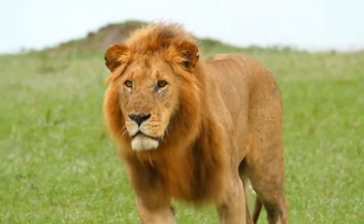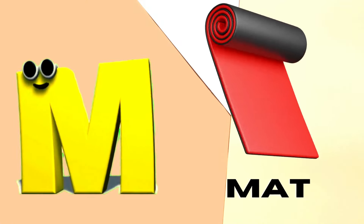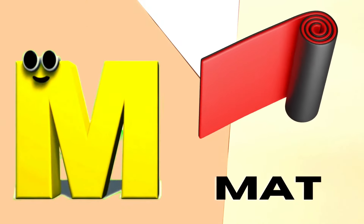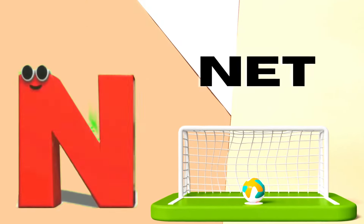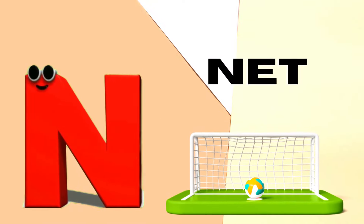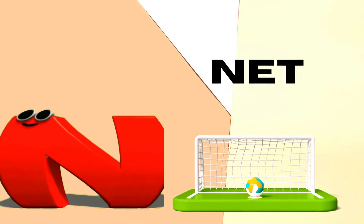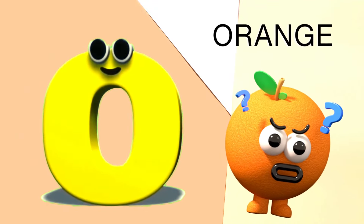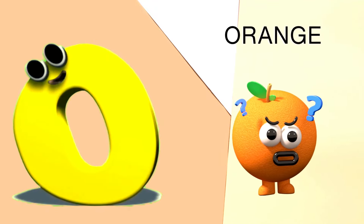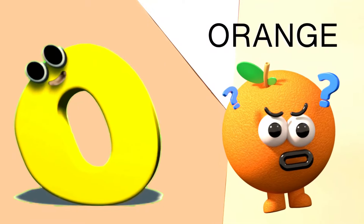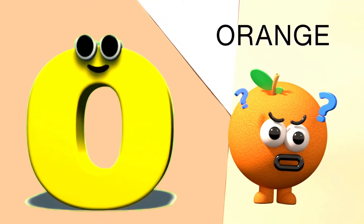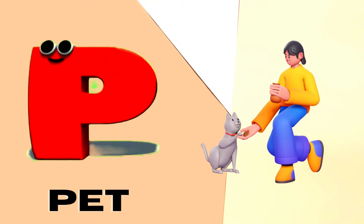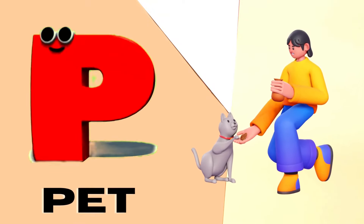M is for Mat, M-M-Mat. N is for Net, N-N-Net. O is for Orange, O-O-Orange. P is for Pet, P-P-Pet.